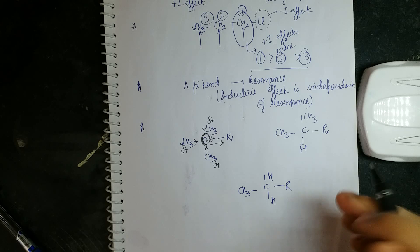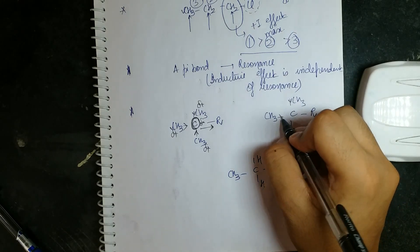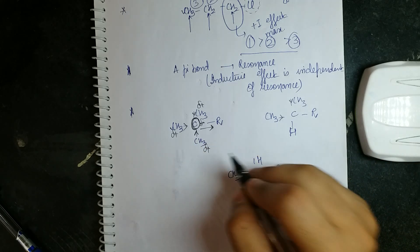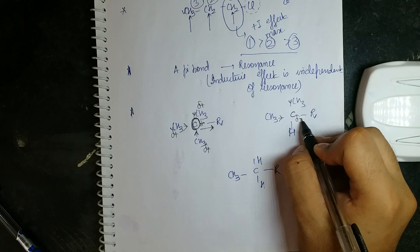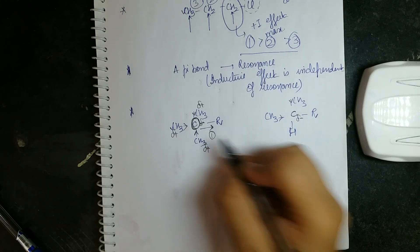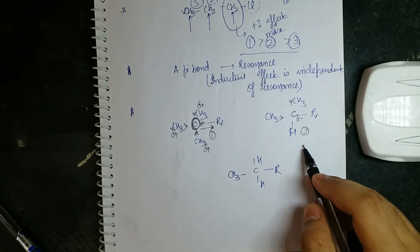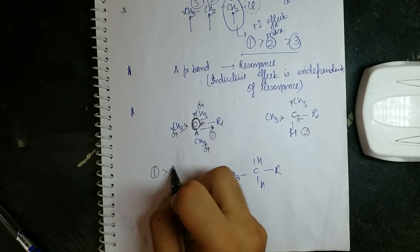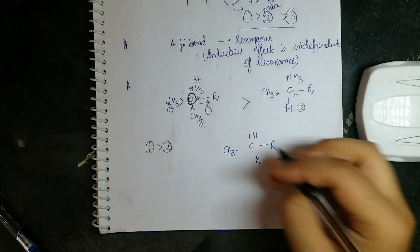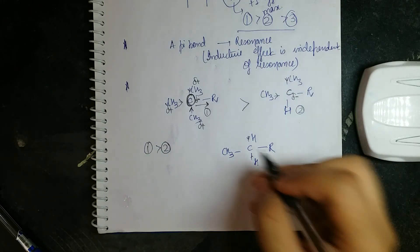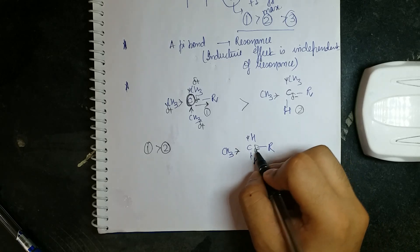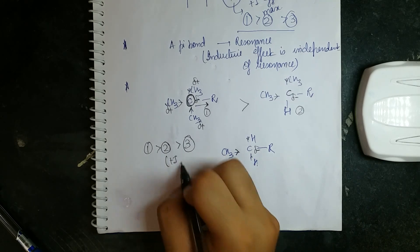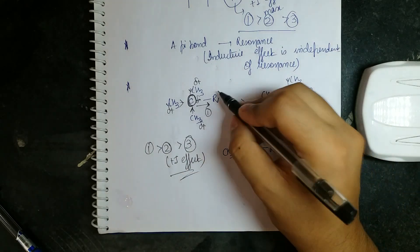In the tertiary case, three CH₃ groups donate, making that carbon most electron rich. In the secondary case, two CH₃ groups donate — H is not as good an electron donor as CH₃. Comparing delta negative: tertiary > secondary > primary. So plus I effect order is: tertiary > secondary > primary (C1 > C2 > C3).